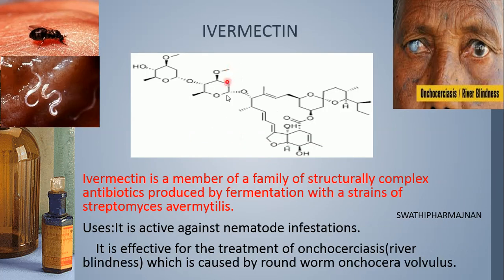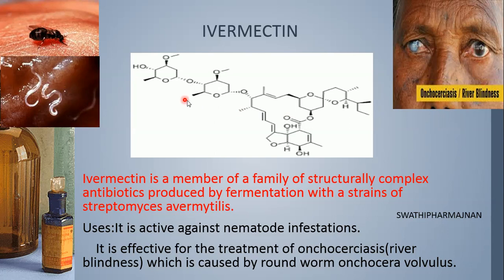The natural product used in the treatment of helminthic infestation is ivermectin. Its structure contains hexose sugars and also a benzene ring with furan — benzofuran is present as the basic nucleus — and various other substituents like methoxy groups, methyl groups, hydroxy groups, and a COO group.